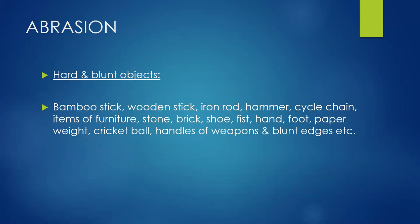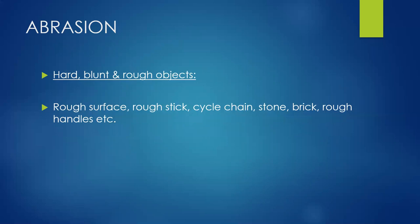Hard and blunt objects that can cause abrasion include bamboo stick, wooden stick, iron rod, hammer, cycle chain, items of furniture, stone, brick, shoe, fist, hand, foot, paperweight, cricket ball, handles of weapons, and blunt edges of objects. Hard, blunt, and rough objects include rough surfaces, rough sticks, cycle chain, stone, brick, and rough handles.